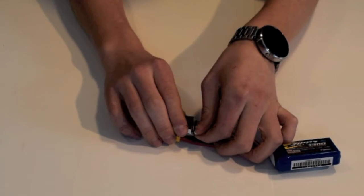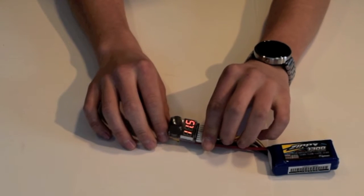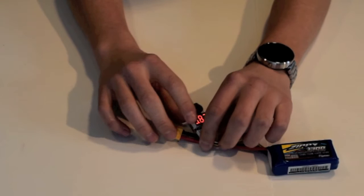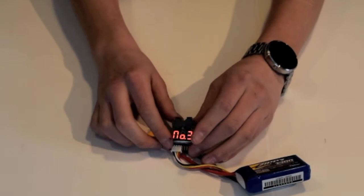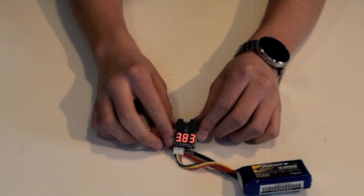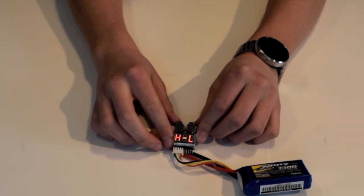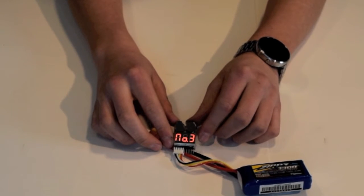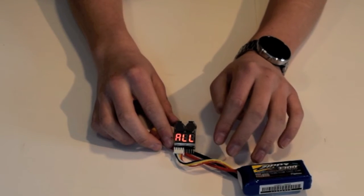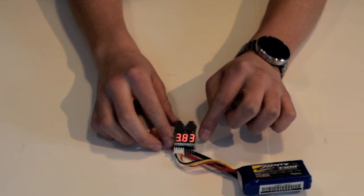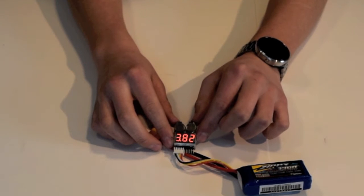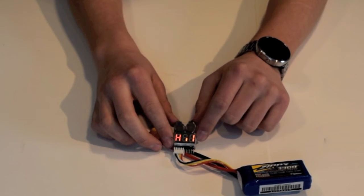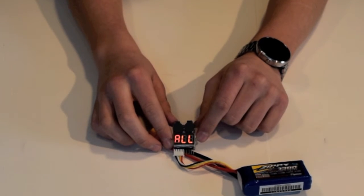When you plug it in, it should sound the alarm, and then it's going to flash through and give you some information. So first it'll say 'all' and it's going to give you the total voltage. There, 11.5 volts.